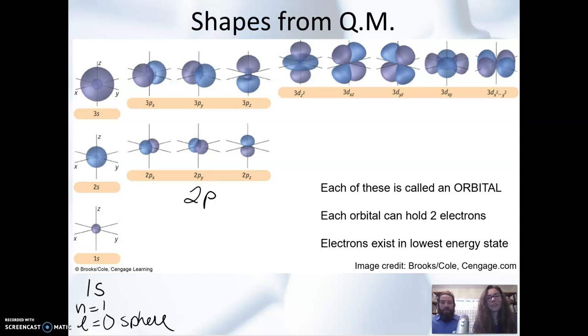And what's interesting here is we have different orientations here, and we're going to get to that in another video. But each of these is called an orbital. It's a region of probability where the electron can exist. And each orbital holds two electrons, and electrons will exist in the lowest energy state that they can. So we just want to mention that now, put that in the back of your mind, and we're going to be revisiting that as we go along.